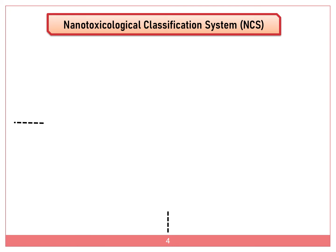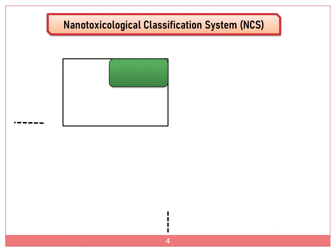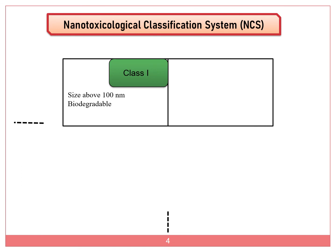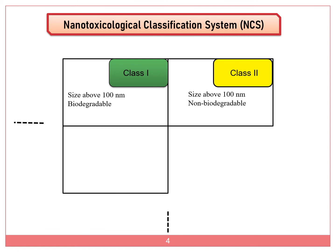The toxicity of nanoparticles has been proposed and can be determined using the NCS classification. The Nanotoxicological Classification System is divided into four classes. Class 1 nanoparticles have a particle size of 100 nm and are biodegradable, so they can easily interact with human cells. Class 2 indicates particle size above 100 nm and is non-biodegradable with the human body. Class 3 shows particle size below 100 nm and is biodegradable with the human body.